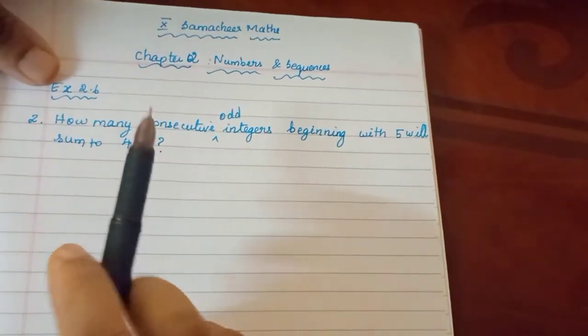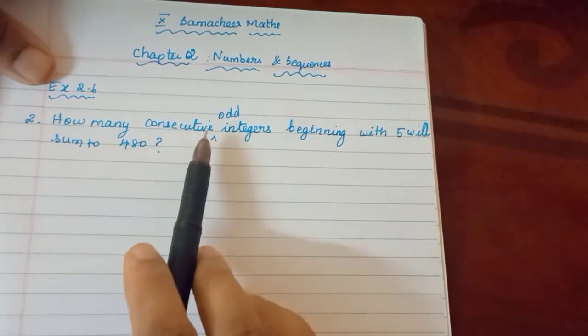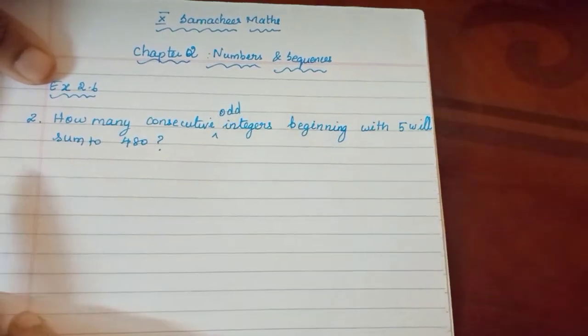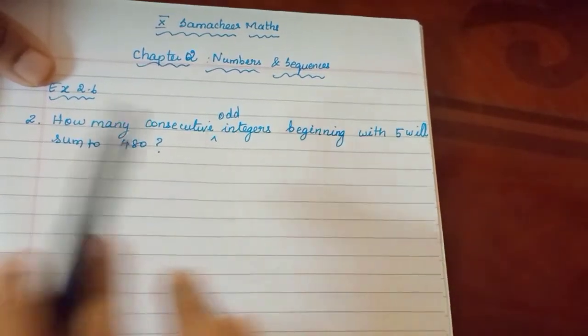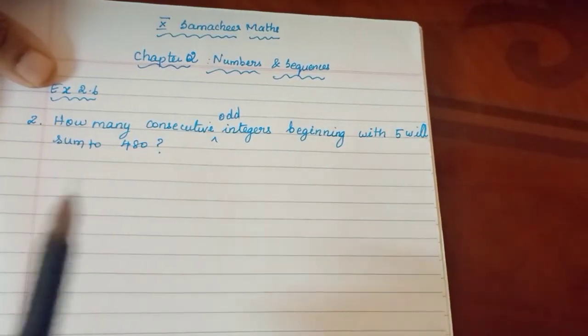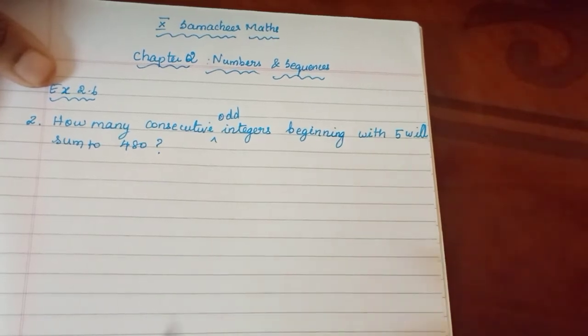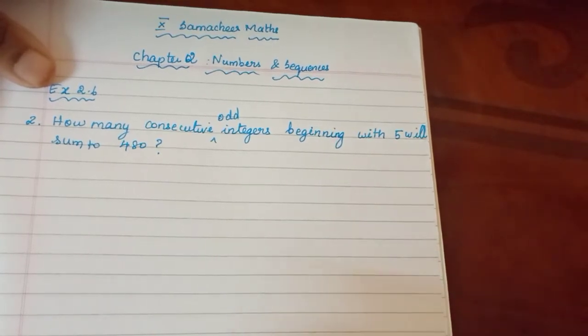Let's carefully read the question. How many consecutive odd integers? Odd numbers. Beginning with 5 — what does that mean? Beginning with 5 means the 1st term is 5.